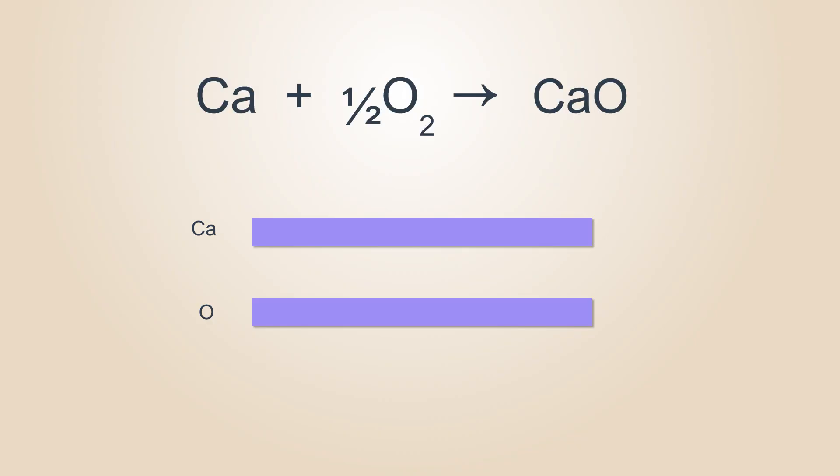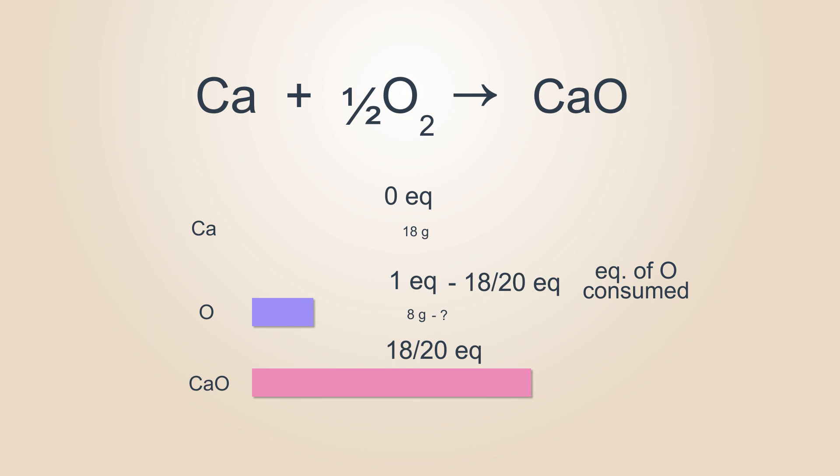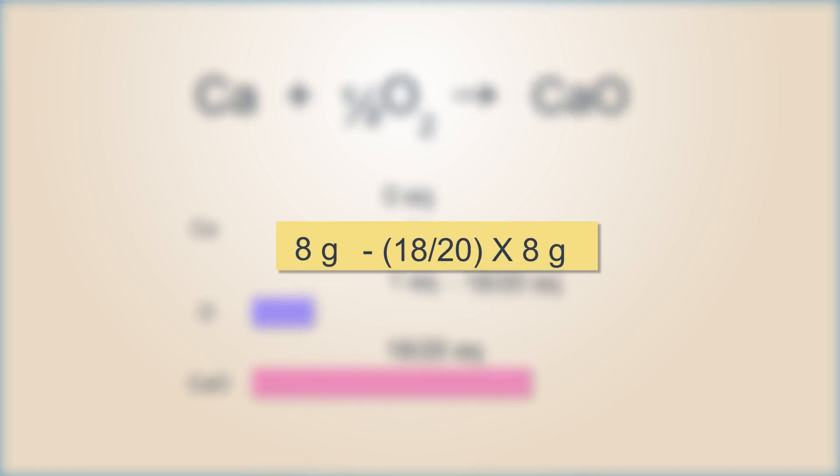Now we will discuss the solution of the problem we had asked. We know 20g of Ca is one equivalent. Hence 18g will be 18 by 20 equivalents. Now same equivalent of O2 will be consumed. One equivalent of oxygen molecule weighs 8g. Hence 18 by 20 equivalents will weigh 18 by 20 into 8g. This is the amount of oxygen consumed in the reaction. So 8 minus 18 by 20 into 8g will be the amount of oxygen left unreacted.